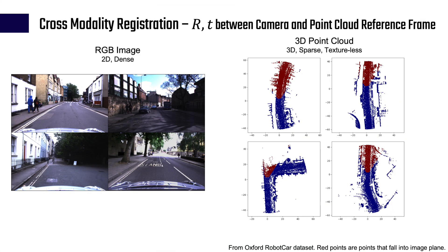The problem we're solving is cross-modality registration. Specifically, given an RGB image and a 3D point cloud, can we estimate the relative pose between the camera and the point cloud reference frame? The problem is difficult because the nature of the two data sources are quite different. RGB images are dense with 2D color information, while 3D point clouds are sparse point sets without textures.